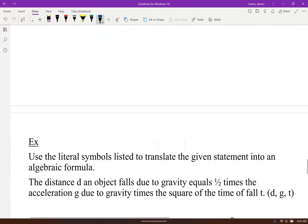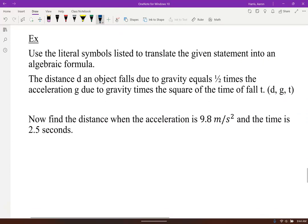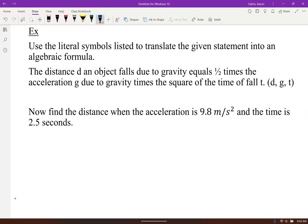Let's go ahead and use that. Now let's use this formula, one-half the gravity times the time squared. Find the distance when the acceleration is, remember our acceleration was the g, 9.8 meters per second squared. There's our g and the time is 2.5 seconds.